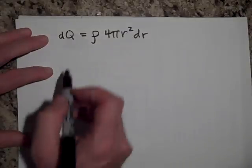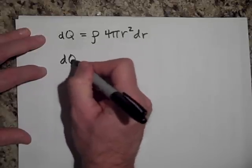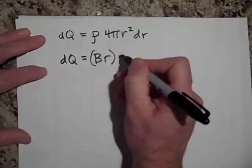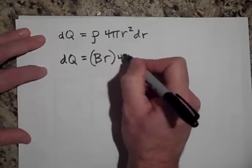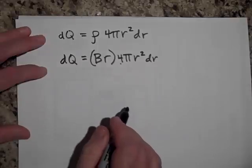But for rho, that's BR. So I'm going to replace that. Rho is BR. That's rho. And then this is the little volume, 4 pi r squared DR. That's the little volume.